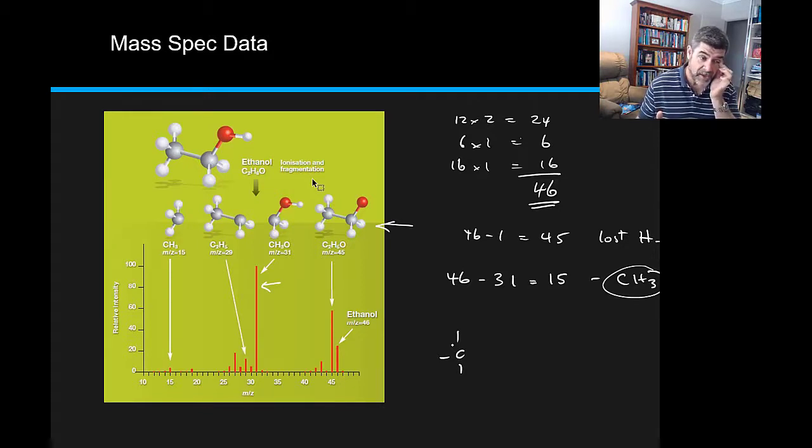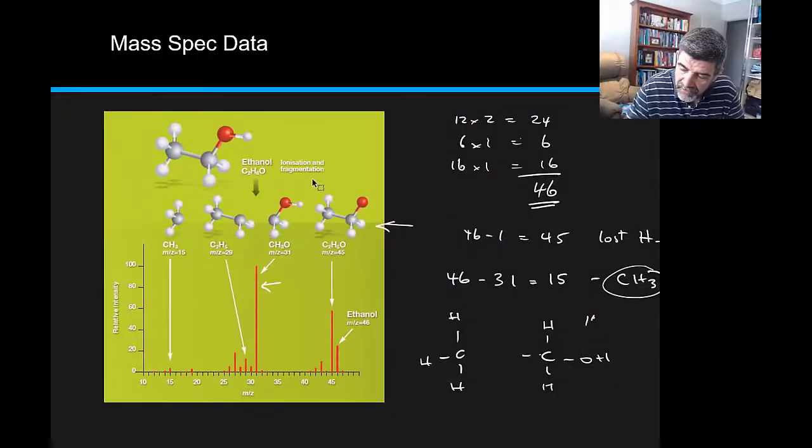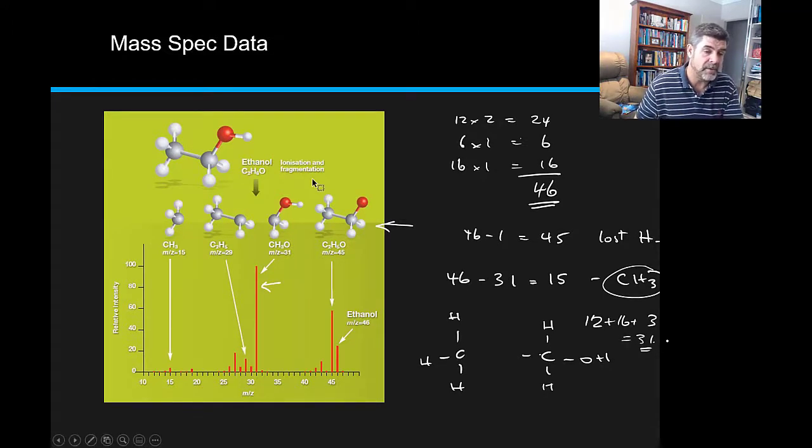Now that leaves us with our 31. So we can also look at what is the nature of the 31. And again, because we know we're looking at ethanol, we know that what's happened is that the rest of that molecule, so a CH2OH, remains after fragmentation. So you can see we've got 12 for the carbon, 16 for the oxygen, and three hydrogens. And this is what's going to give us our mass of 31.